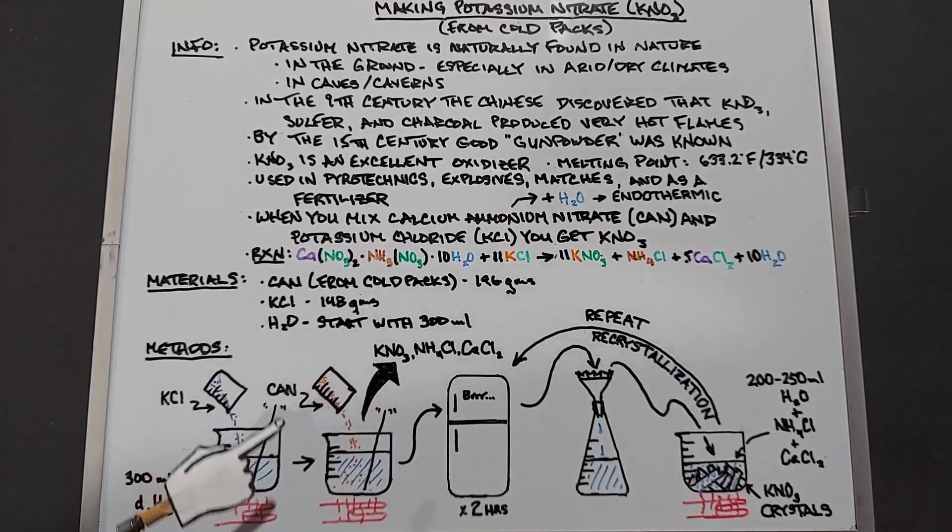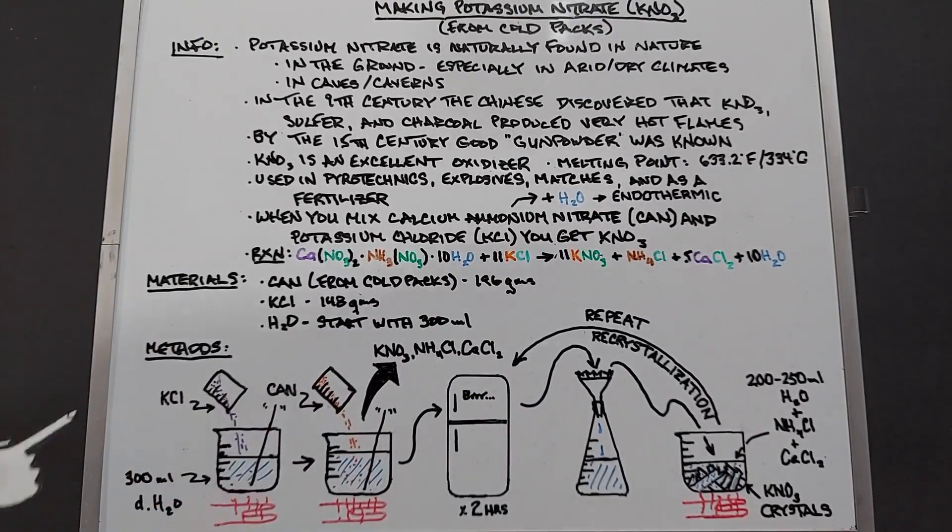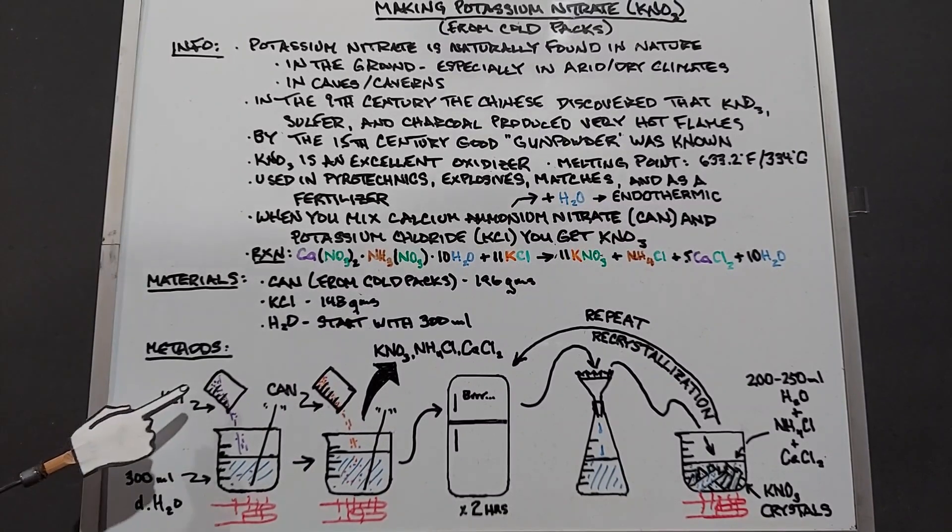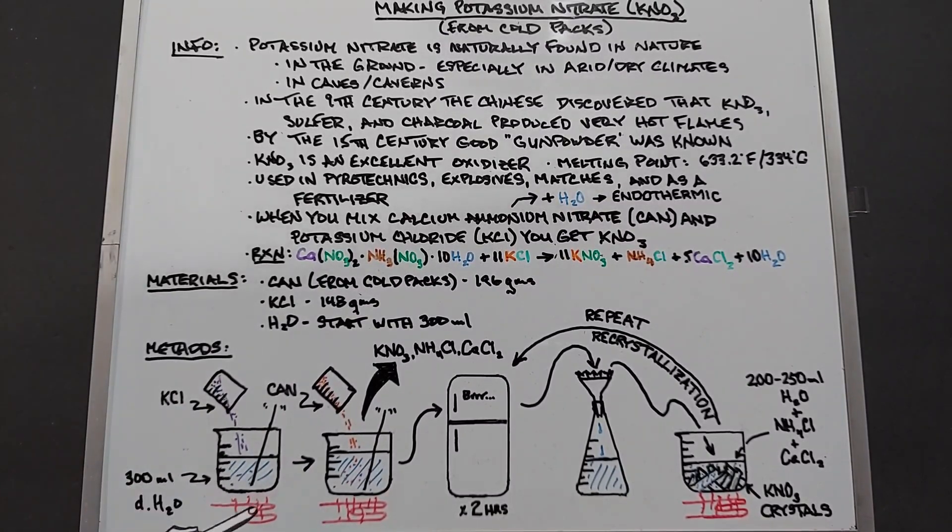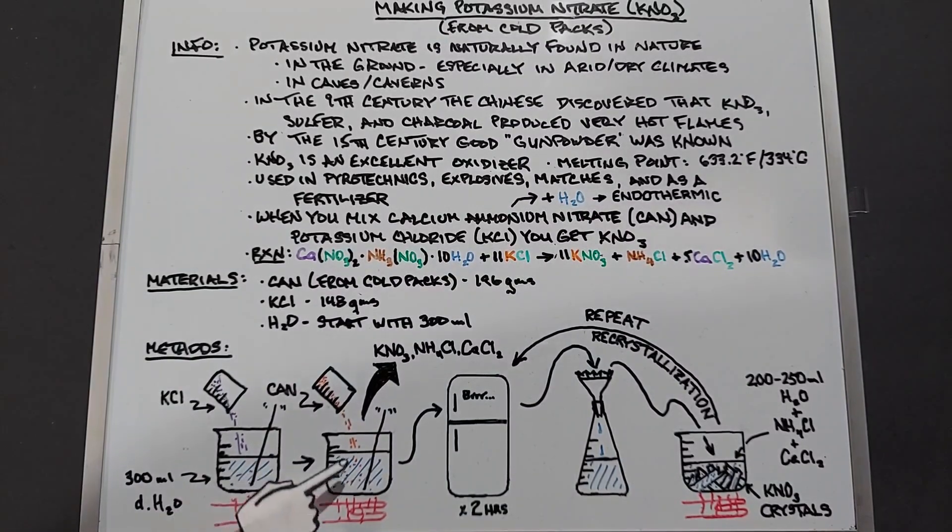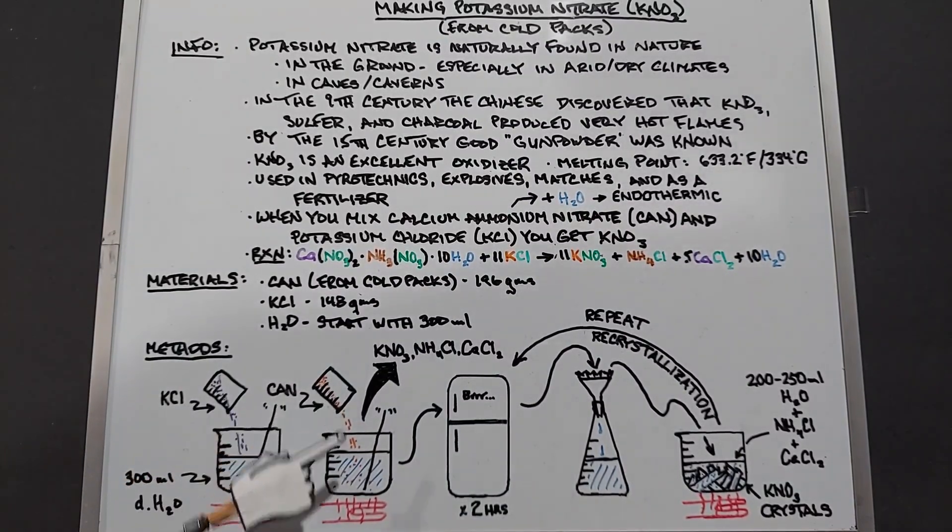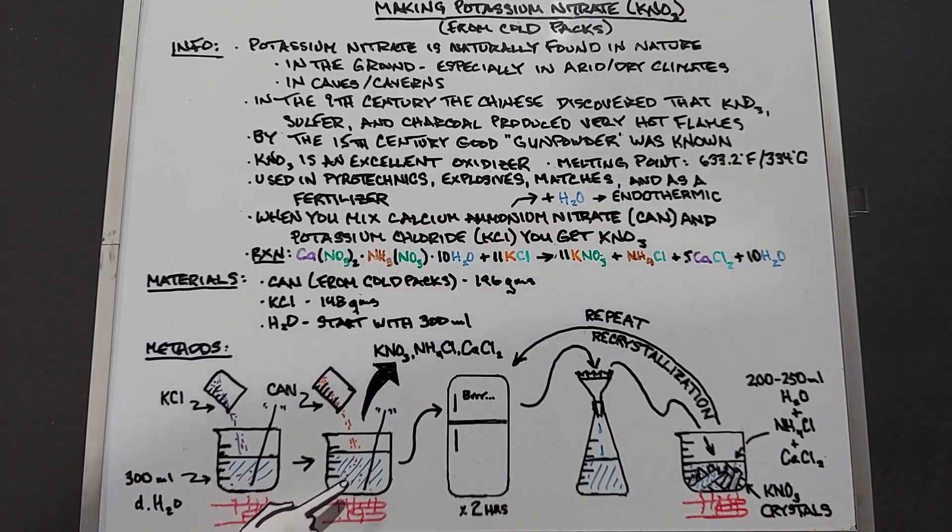In our methods, in order to perform this double displacement reaction, we're going to take a beaker, fill it with 300 milliliters of distilled water, and we're going to put our potassium chloride in there and heat it until it's all dissolved. Once it's dissolved we're going to add our calcium ammonia nitrate and dissolve that in there also, so both the potassium chloride and the CAN are dissolved in 300 milliliters of water and it's heated until everything's dissolved.